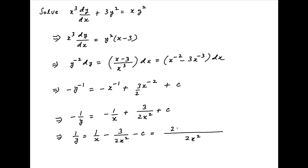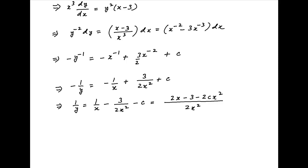Taking the common denominator 2x square on the right-hand side and the numerator is 2x minus 3 minus 2cx square. Cross multiplying we get 2x square is equal to 2xy minus 3y minus 2cx square y. Moving all the terms to the left-hand side we get 2x square minus 2xy plus 3y plus 2cx square y is equal to 0 which is the required answer.